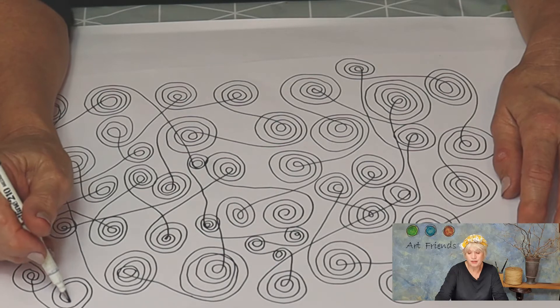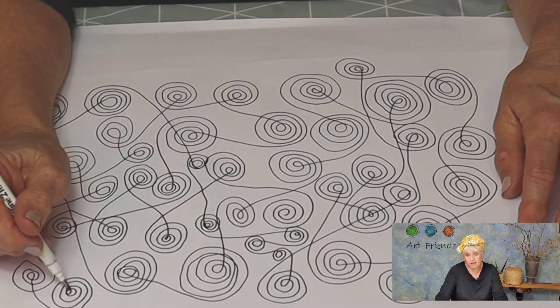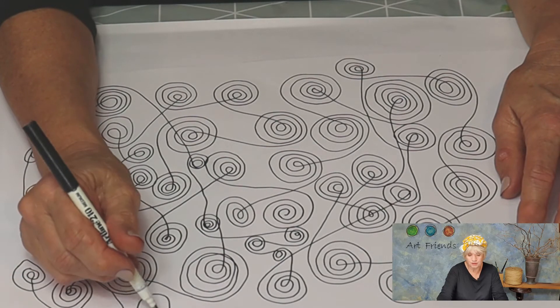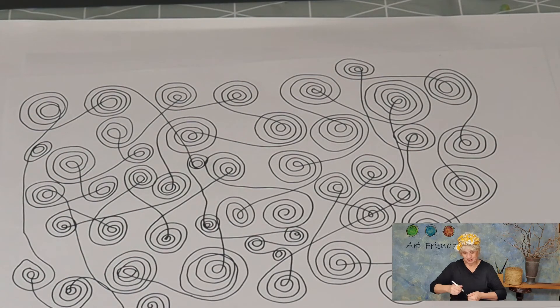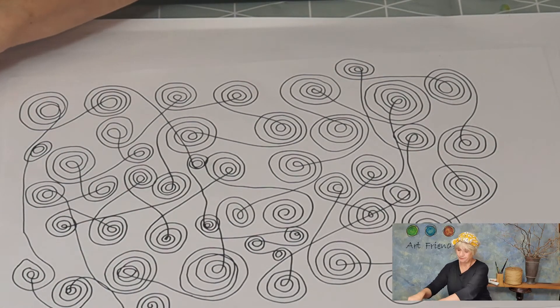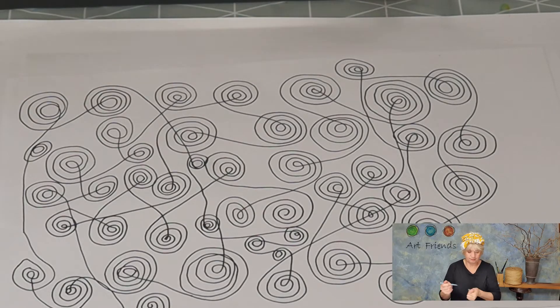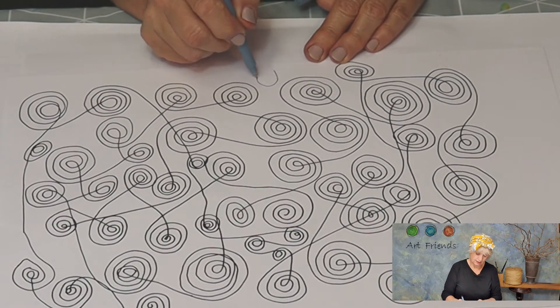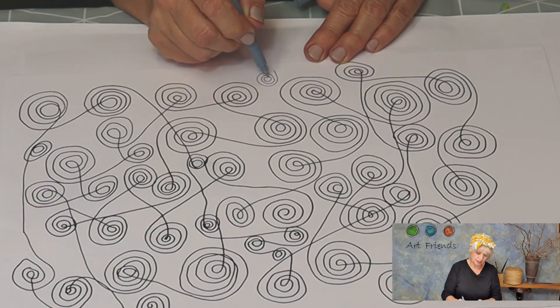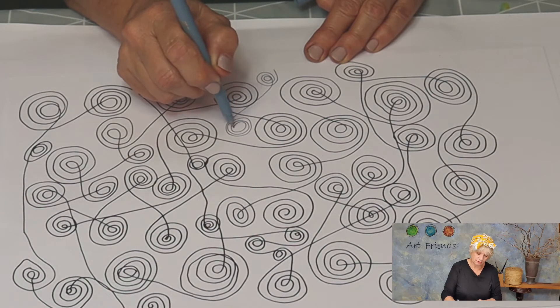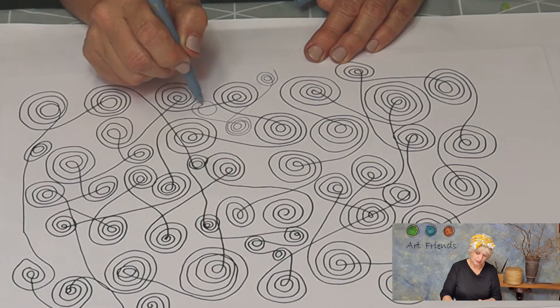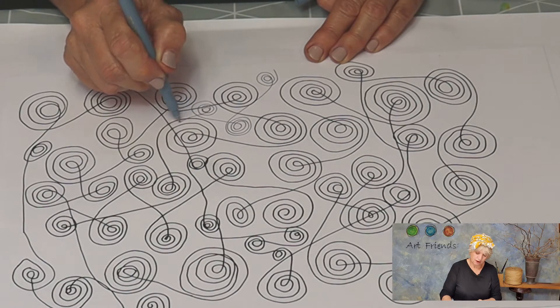Once you think you're finished with your thick fine liner, you might want to grab the thinner fine liner and find some spots to fill with that. Same idea, just leaving the pen on the page, just finding some little places for our fine lines.